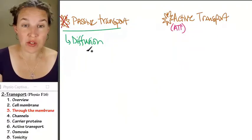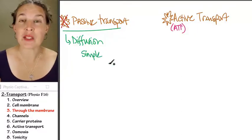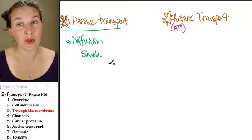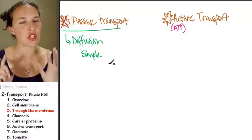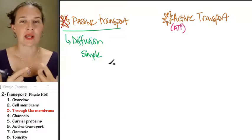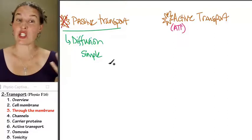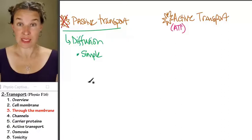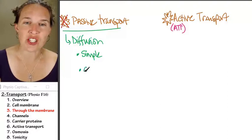Simple diffusion happens when molecules move directly through the cell membrane. Oxygen, carbon dioxide, those are the two best examples of substances that move directly through the cell membrane. It's fast. It's easy. You don't need any help. You also have still diffusion. You can have diffusion through a channel.